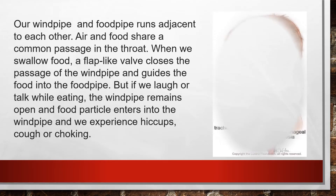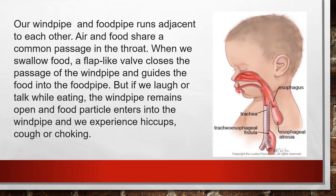When we breathe, the air passes through the wind pipe or trachea. The wind pipe is for the movement of air, and the food pipe is for food. Our wind pipe and food pipe run adjacent to each other. You can see in this picture — this is the food pipe and this is the wind pipe. Both pipes go together, adjacent to each other. Air and food share a common passage in the throat area, so both have a common pipe in that region.